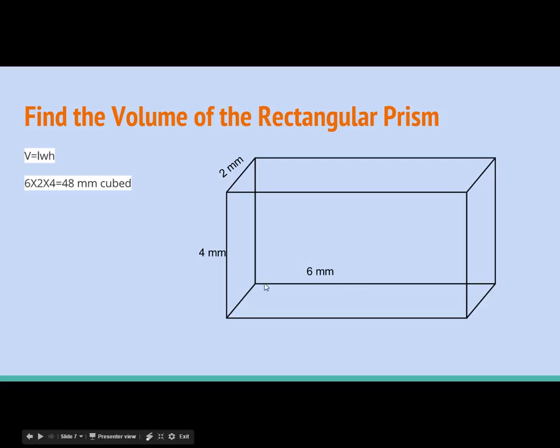The length of this rectangular prism is 6. The height is 4, the width is 2. We're going to multiply length times width times height, 6 times 2 times 4, and we're going to get 48 millimeters cubed.